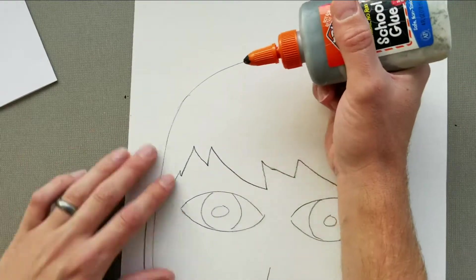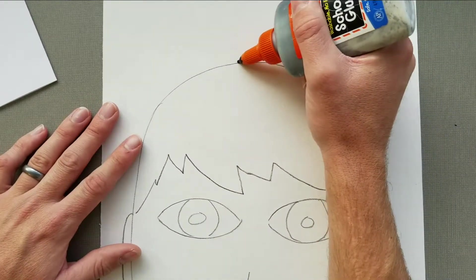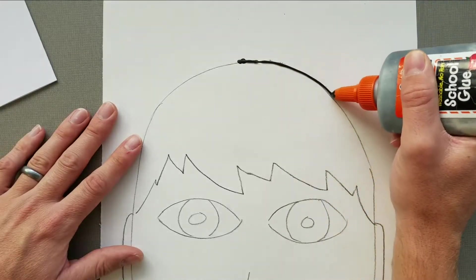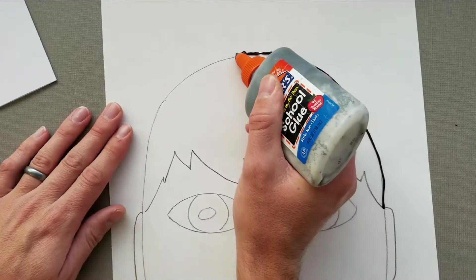So ideally you want to start way up here at the top. Again, touch the paper, squeeze nice and gently, and just follow that. I'm going to stop at my ear, then I'm going to go back to the top and now I'll start following my hair.